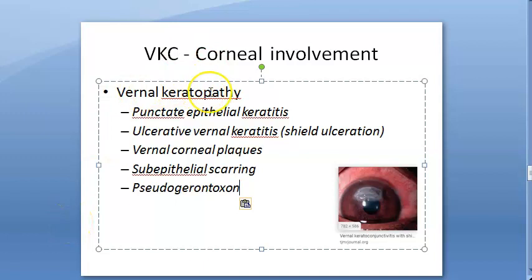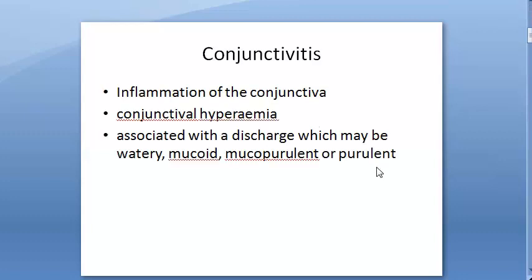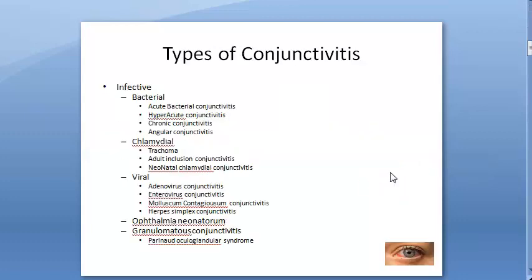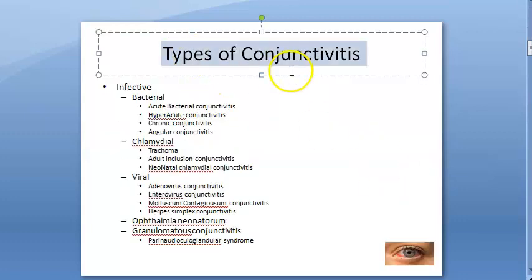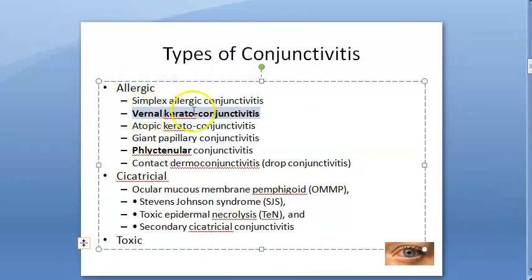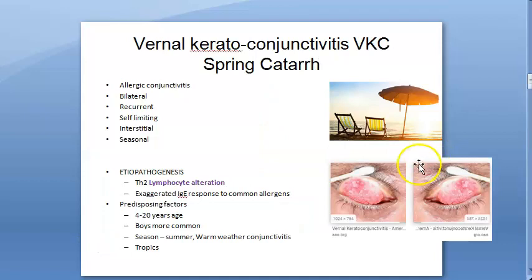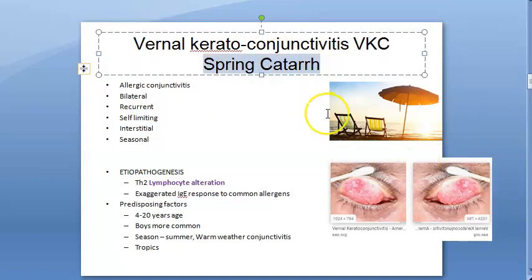Hello people. In this video, let us look at vernal keratopathy. Basically, where are we? We started off with conjunctivitis. Before this, we have already seen conjunctiva anatomy and all that. In conjunctivitis, we saw types of conjunctivitis in which there is infective and then there is allergic, etc. Under allergic, we are focusing today on the vernal keratoconjunctivitis, which is also called as spring catarrh, or VKC.